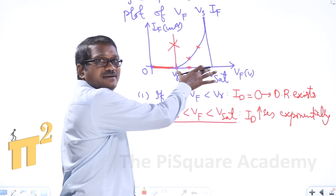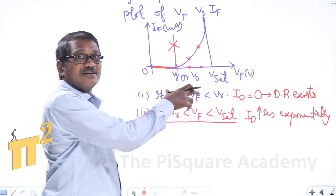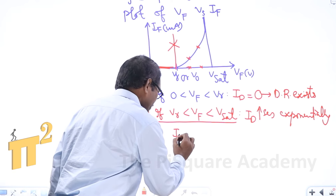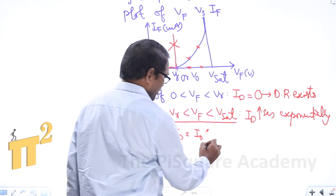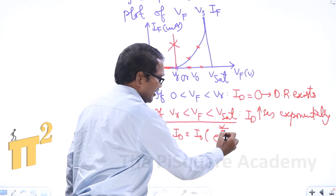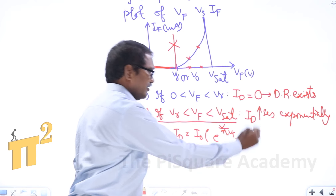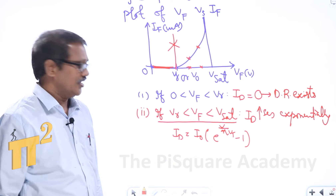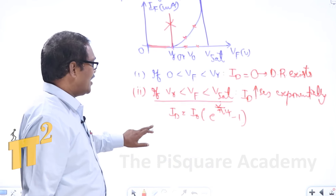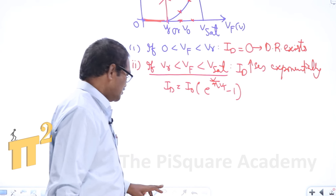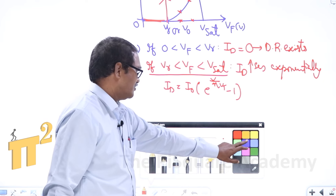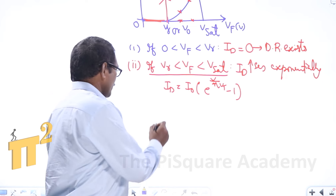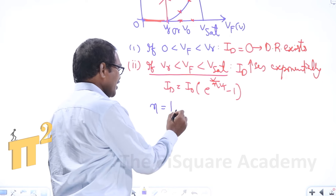In this exponential region, the current through the diode is governed by the mathematical equation: id = i0 × (e^(V/η·Vt) − 1), where η is the ideality factor.